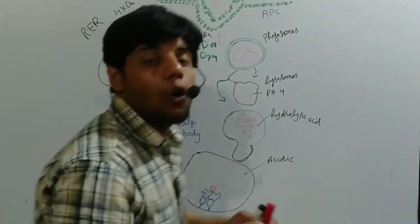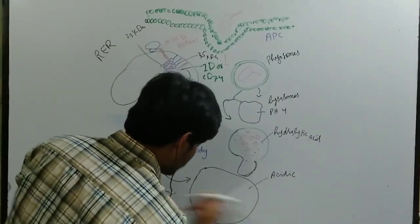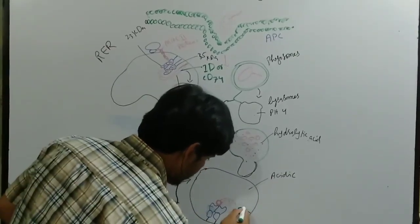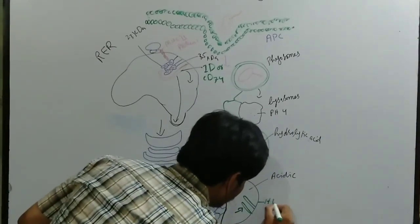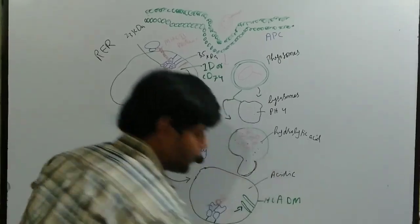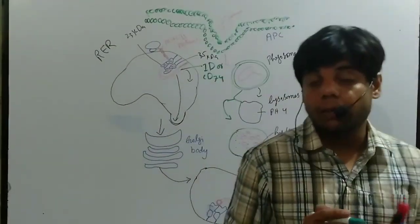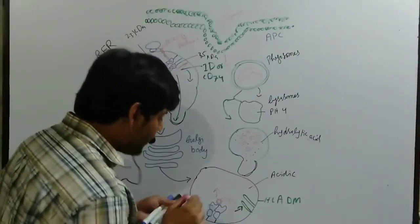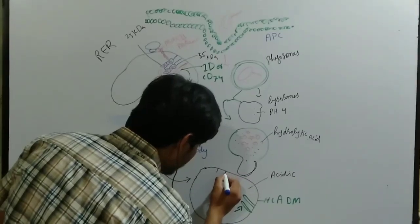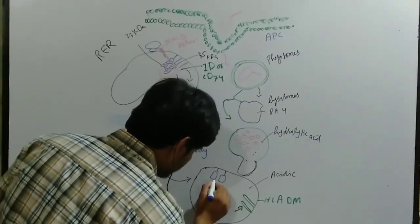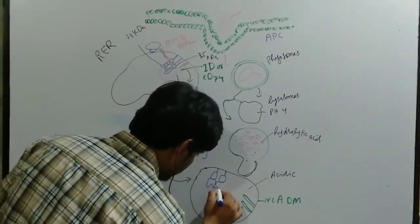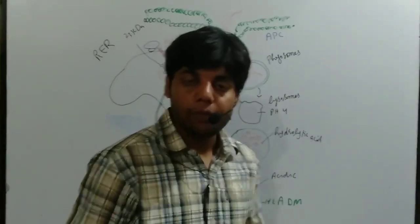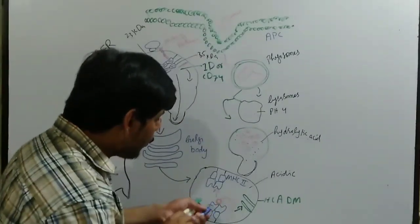After the Ii protein breaks down, only the CLIP remains. The MHC2 molecule then binds with another protein called HLA-DM protein. Once it binds with the HLA-DM protein, the CLIP is removed, and finally we get a free, complete MHC2 molecule.